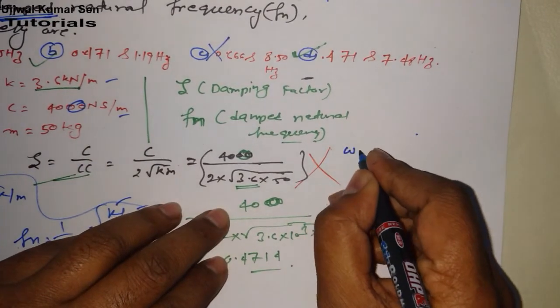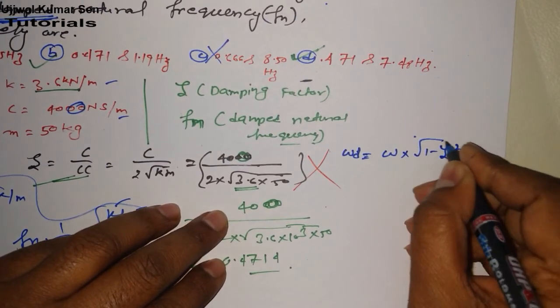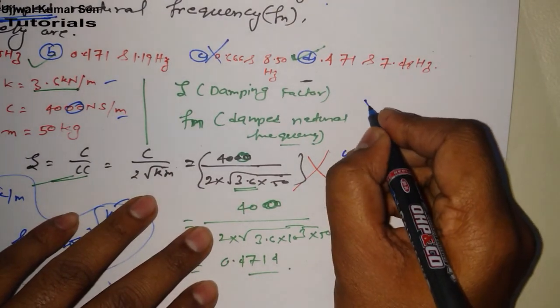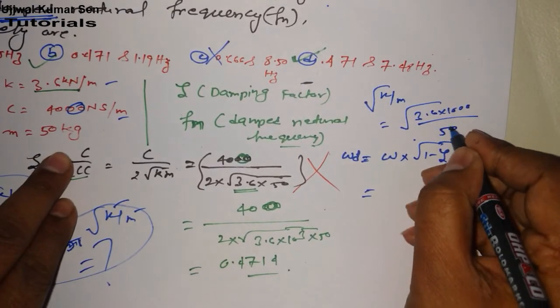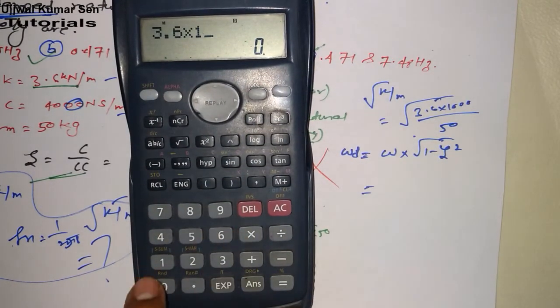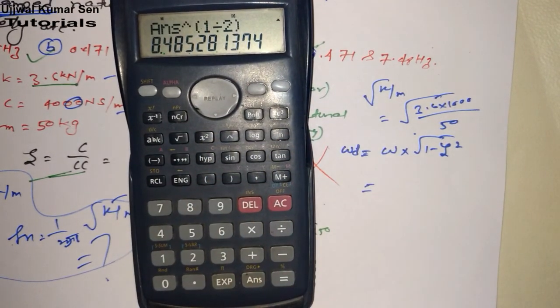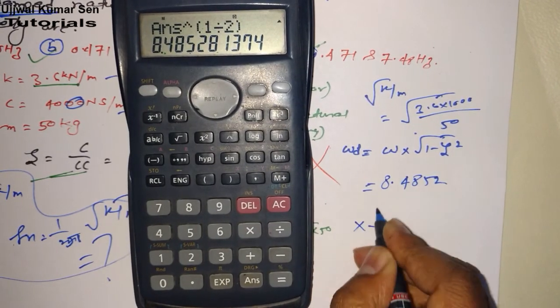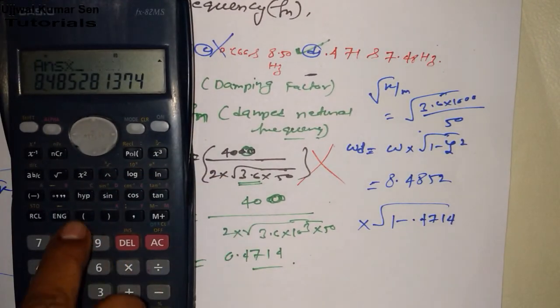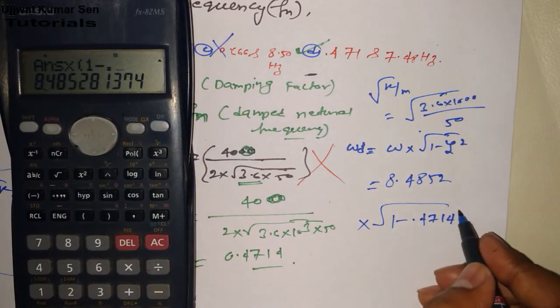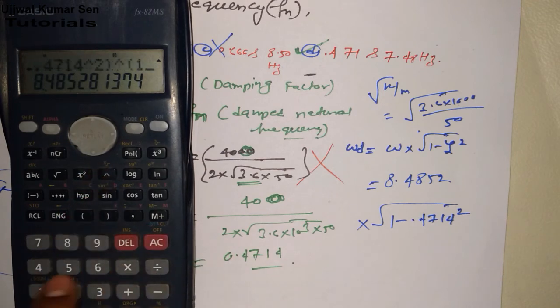Now what you have to do? You have to use wd = ω√(1-ζ²). So omega is what we have to find out, that is √(K/M). So 3.6 × 1000 and M is 50 kg. 3.6 × 1000 divided 50 is equal to 72. Its root is 8.4852 multiple 1 minus zeta square. Zeta is 0.4714. So multiple 1 minus 0.4714 square, its root also.